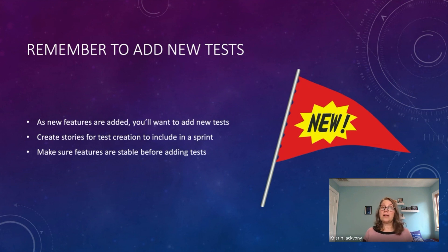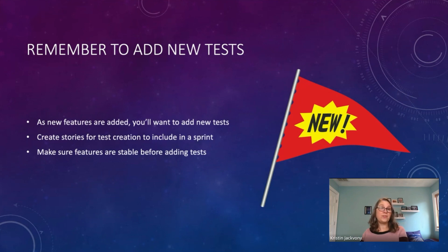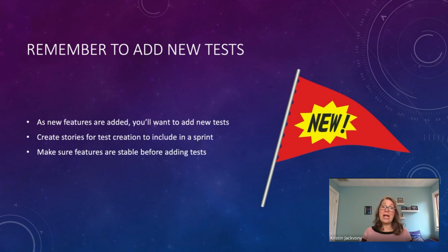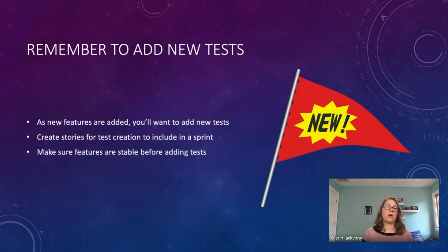Also make sure features are stable before adding tests. In web automation, people often recommend creating tests while the developer is coding the feature, which can save time. But with mobile, because things change so quickly, it's a good idea to wait for the feature to be completely stable before adding tests. If you want to add some kind of testing in the meantime, consider API testing, which you can do before the actual elements are on the screen.